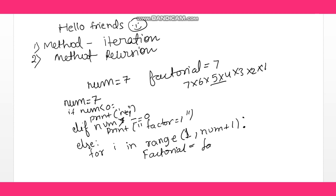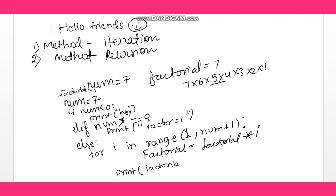Inside the loop, we do: factorial = factorial * i. But what is the initial value of factorial? We give factorial an initial value of 1. We use 1 because if we used 0, then 0 × i would always be 0. So we initialize factorial to 1, then multiply through the range. After the loop, we print the factorial of the number.